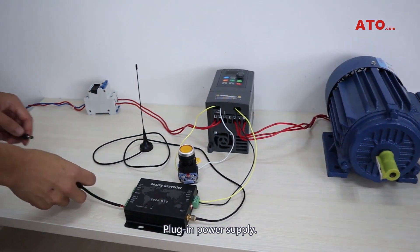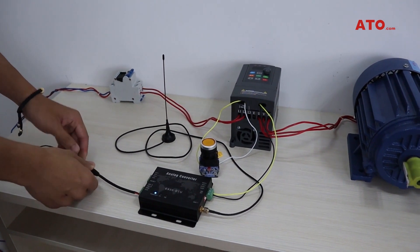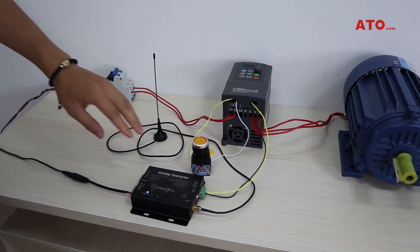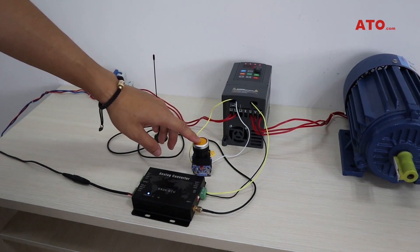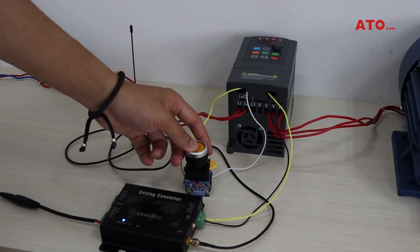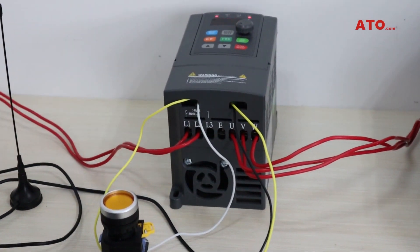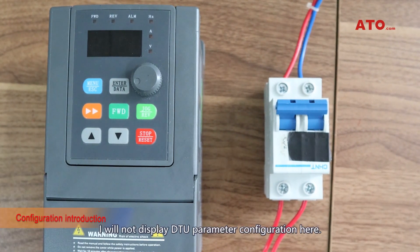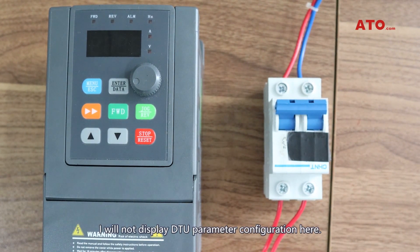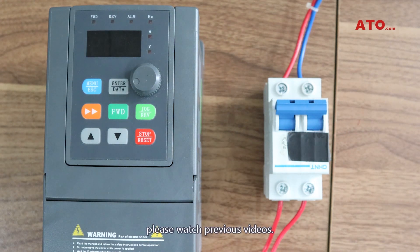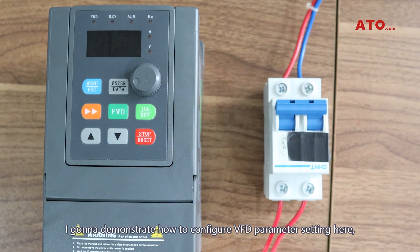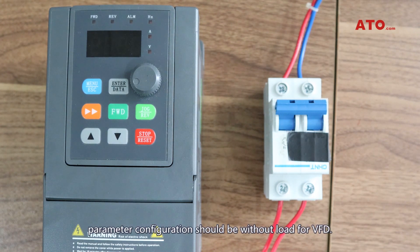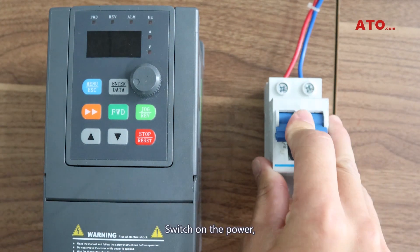Plug in power supply. I will not display DTU parameter configuration here. If you forgot how to do it, please watch the previous video. I am going to demonstrate how to configure VFD parameter setting. Parameter configuration should be without load for VFD. Let's switch on the power.